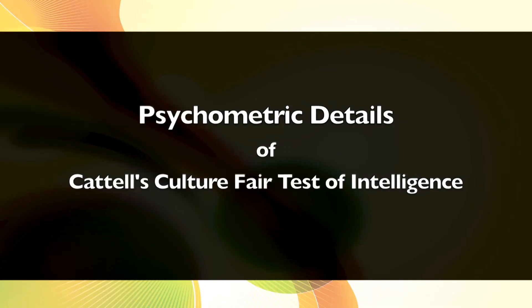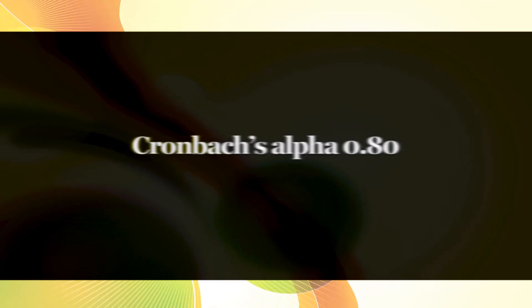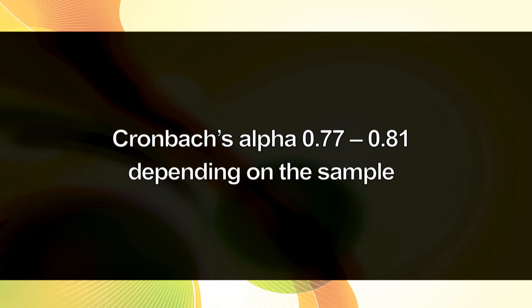Now let us look at the psychometric details of Cattell's Culture Fair Test of Intelligence. First, reliability: there is entirely satisfactory internal consistency for the general score, with Cronbach's Alpha at 0.80. Part A is slightly lower but satisfactory, with Cronbach's Alpha of 0.77 to 0.81 depending on the sample. There is high test reliability in adults, though lower in high school students, whose scores improve significantly after three weeks.